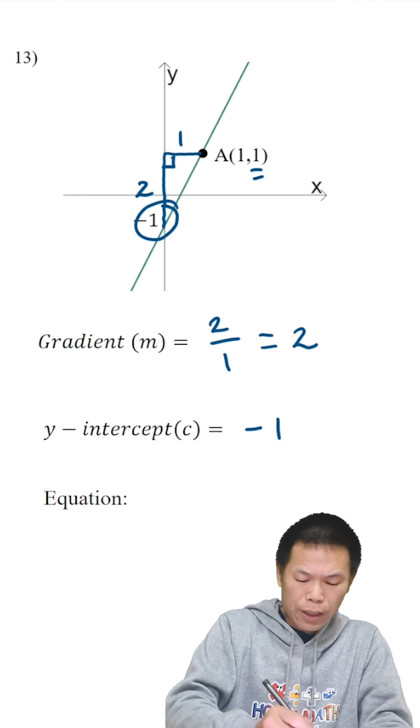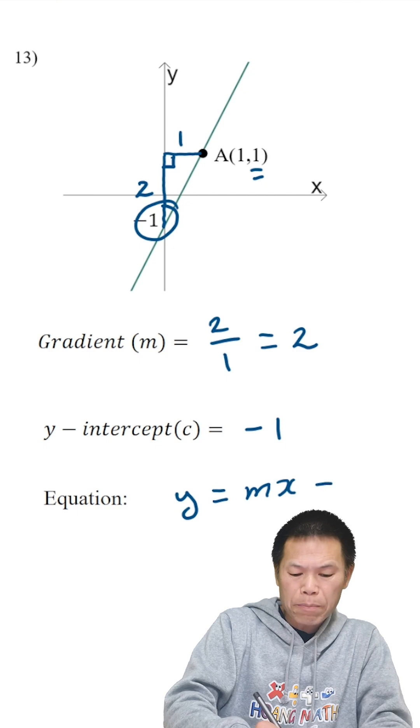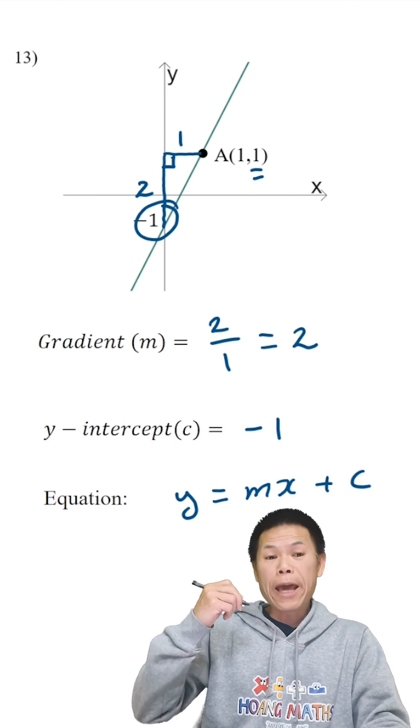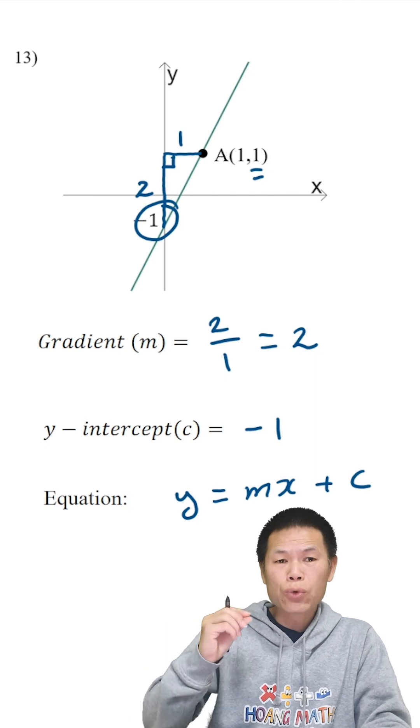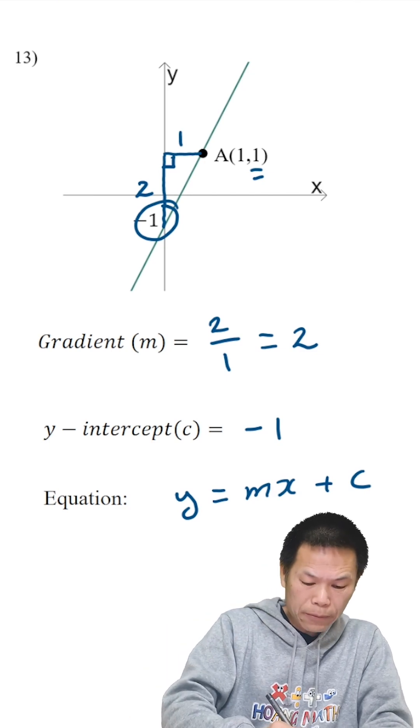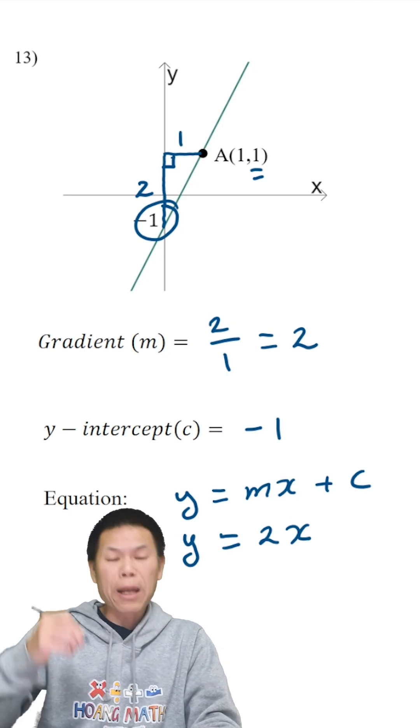So the equation of this line here is y equals mx plus c. And m is 2. So therefore, 2 times x is 2x. So y is equal to 2x plus c.